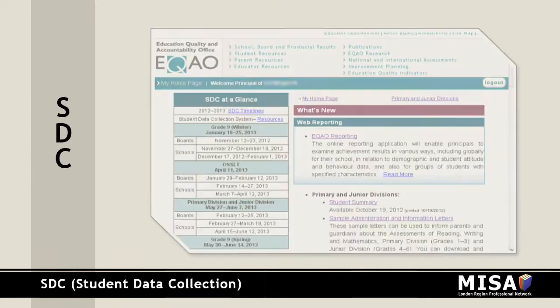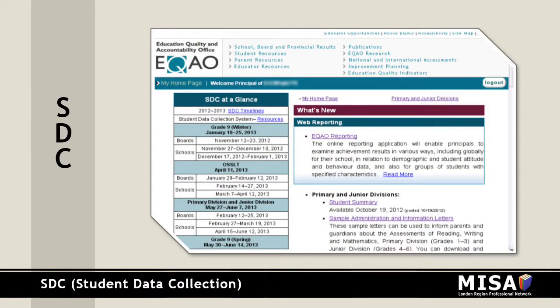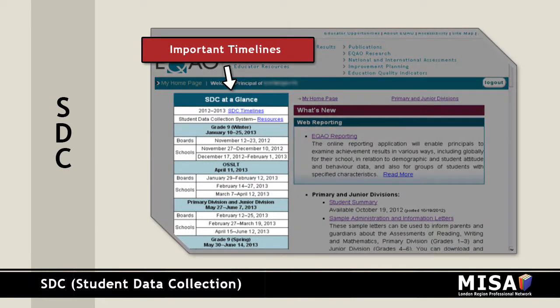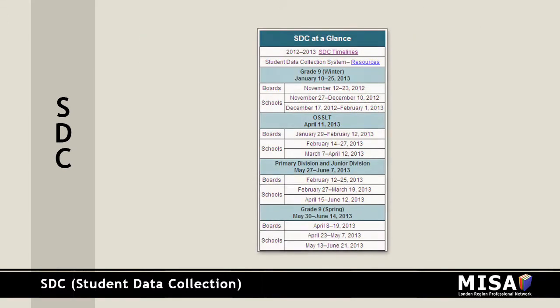Please note the important timelines that can be downloaded from SDC at a glance. The student data collection process outlines important deadlines and tasks, such as ordering special versions of the test and indicating which students require accommodations or exemptions.